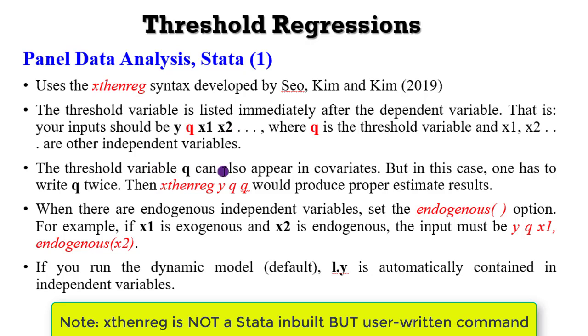The threshold variable can also appear twice among the independent variables. In that case, the threshold variable must be written twice, as you can see in this example.